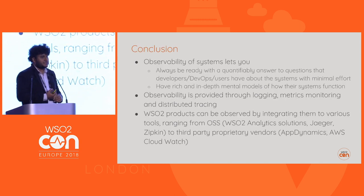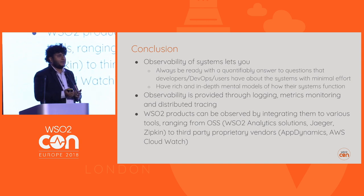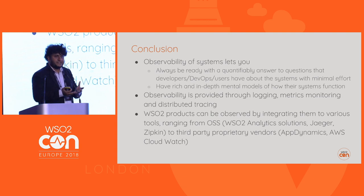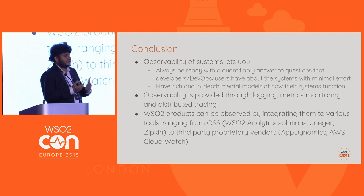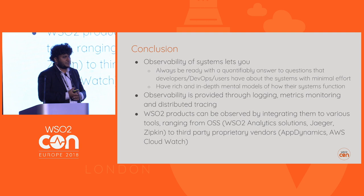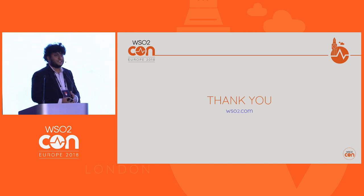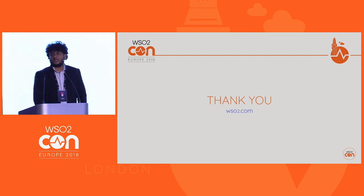In conclusion, observability is important for figuring out the actual inner workings of a system, making it easier to debug and tune your applications. Observability is provided through logging, metrics monitoring, and distributed tracing. Our WSO2 products can be observed using the WSO2 Analytics Server and open source software products. Hope this session was useful — thank you.